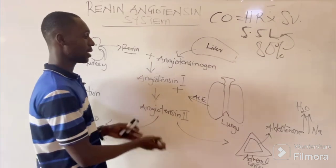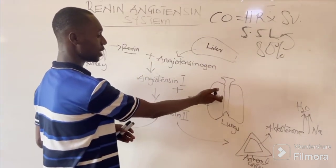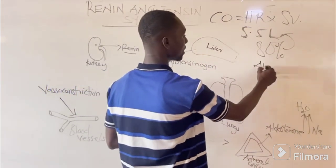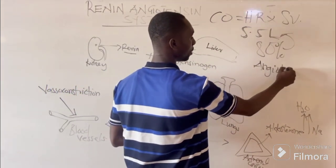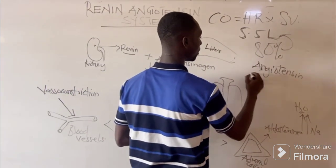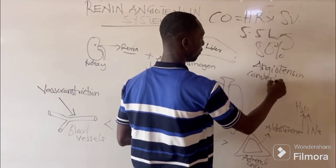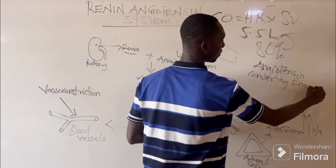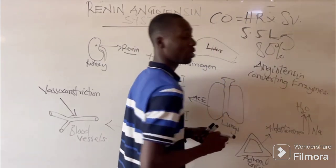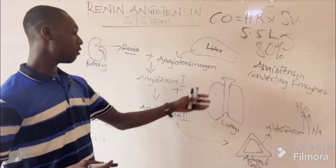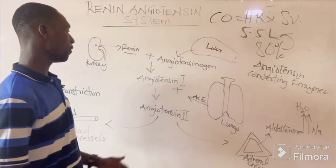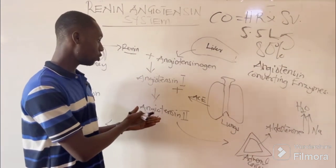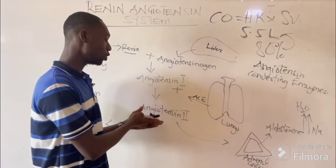When that happens, the lungs would also release ACE — that is, the angiotensin-converting enzyme. This angiotensin-converting enzyme is going to convert angiotensin 1 to angiotensin 2.